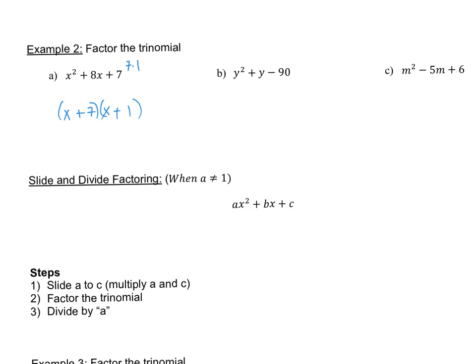This next one is in terms of y, but it works the same way — just use y's instead of x's. We have y squared plus y minus 90, so c is negative 90 and b is 1. Factors of 90: let's try 9 and 10. Since 10 minus 9 gives 1, and c is negative, one must be negative. The middle term is positive, so give the positive sign to the bigger number: 10 is positive, 9 is negative. Checking: negative 9 times 10 is negative 90, and negative 9 plus 10 is positive 1. This works.